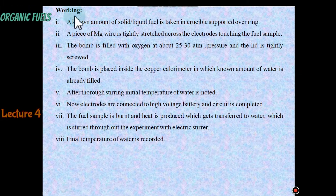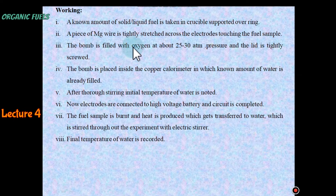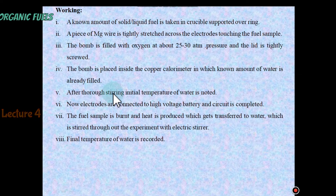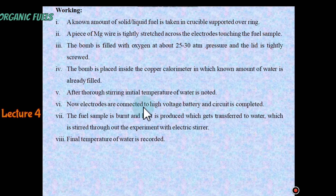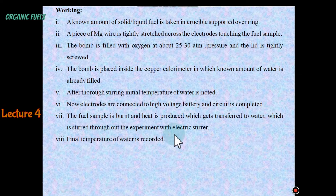For the basic working: a known amount of solid or liquid fuel is taken in a crucible supported over rings. A piece of magnesium wire is tightly stretched across the electrodes, touching the fuel sample. The bomb is filled with oxygen at about 25 to 30 atm pressure, and the lid is tightly screwed. The bomb is placed inside the copper calorimeter in which a known amount of water is already filled. After thorough stirring, initial temperature of water T1 is noted. Electrodes are connected to a high voltage battery and the circuit is completed. The fuel sample is burned, heat is produced and transferred to water, which is stirred throughout with an electric stirrer. Final temperature of water T2 is recorded.